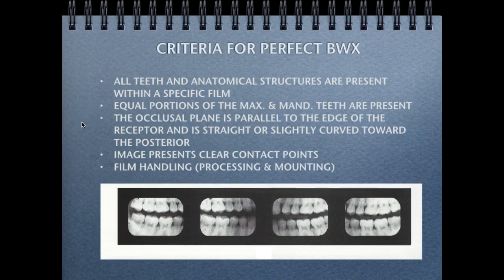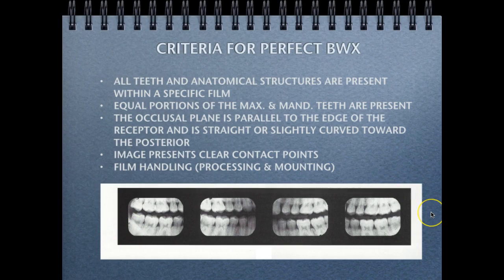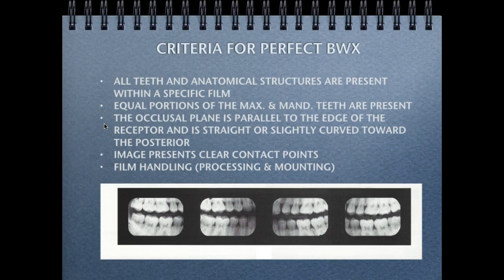For image evaluation of bite wing X-rays, there are standard criteria. First, do you have the required teeth and anatomical structures present within the image? For bite wings, we typically have a molar and a premolar bite wing for both the patient's right and left. Do you have equal portions of maxillary and mandibular teeth? Is the occlusal plane parallel to the edge of the receptor and straight, or slightly curved toward the posterior? This bite wing series meets those criteria well.